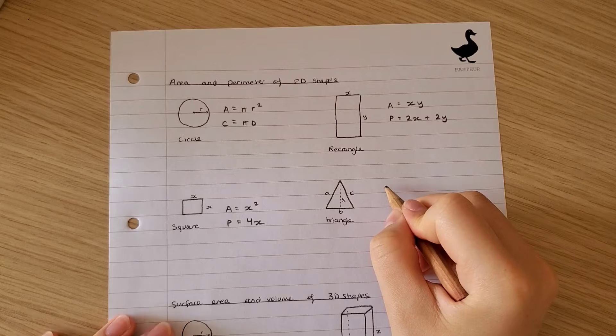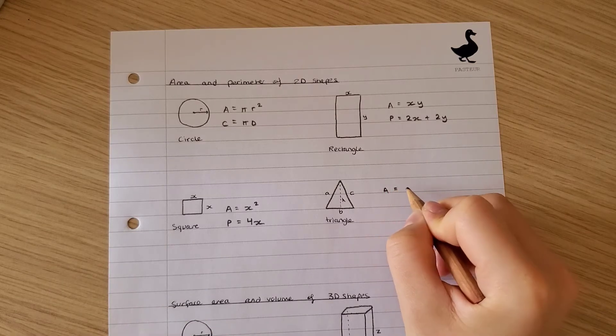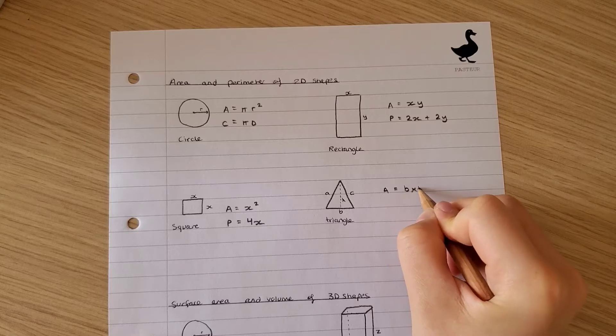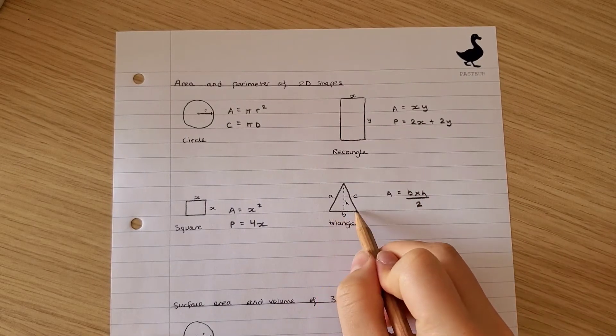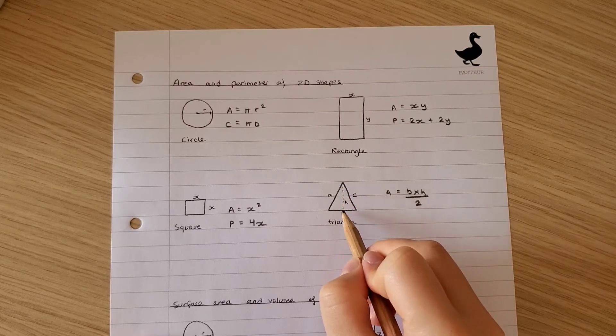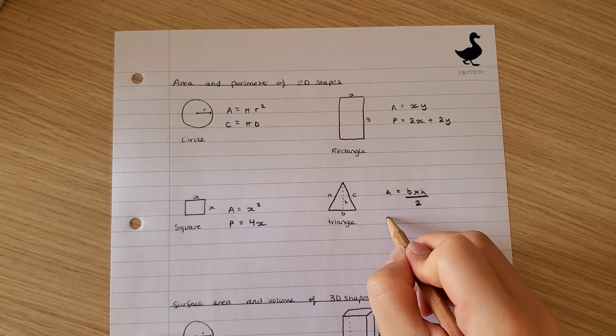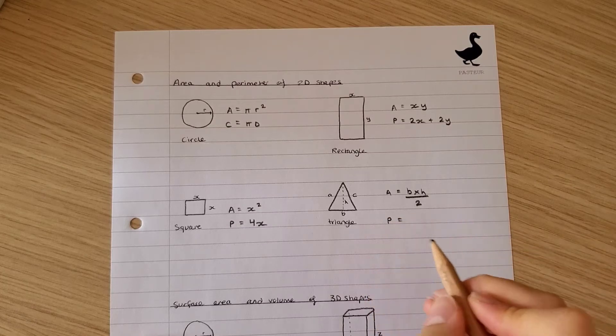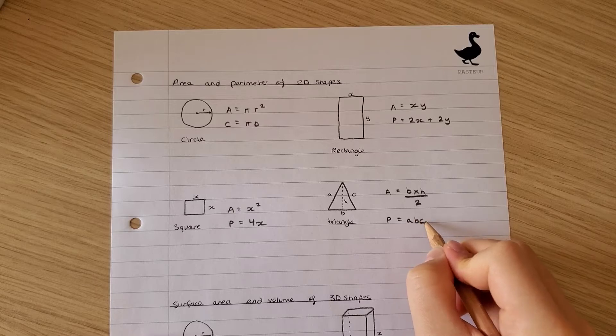For a triangle, the area is the base times the height divided by 2. So the base of the triangle multiplied by the height of the triangle divided by 2. The perimeter is all of the sides added up, so a plus b plus c.